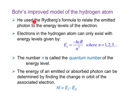Bohr used the Rydberg's formula to relate the emitted photon to the energy levels of the electron. Electrons in the hydrogen atom can only exist with energy levels given by this formula. E is the energy. N is called the quantum number of the energy level. The lowest level is 1, 2, 3 and so on.